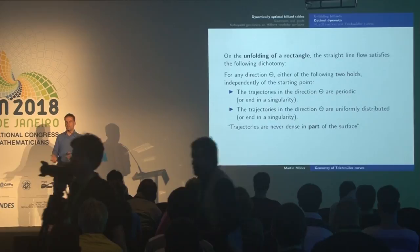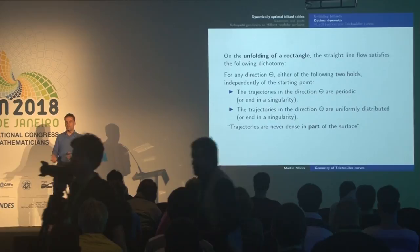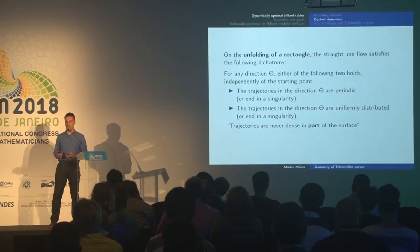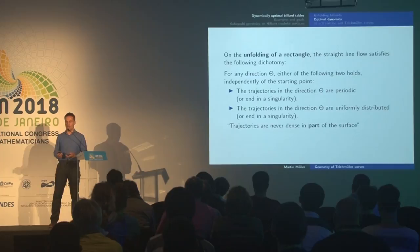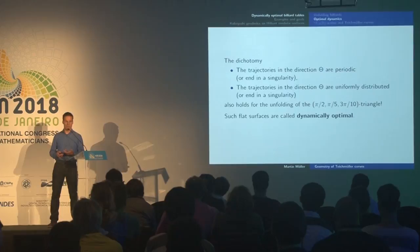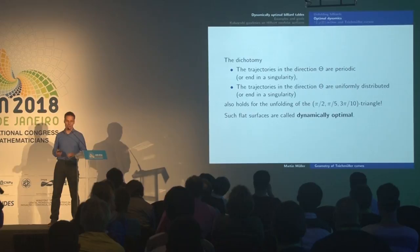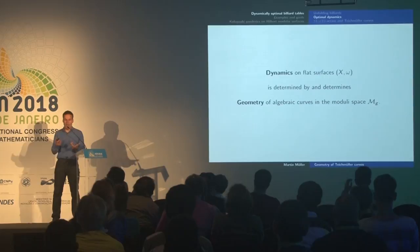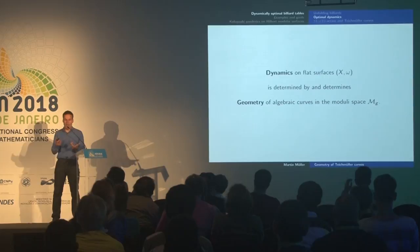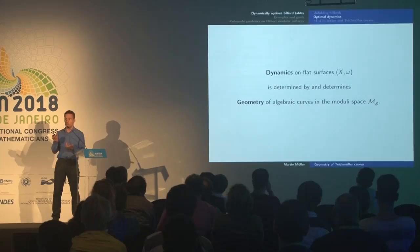For the square, this dichotomy is very easy: it's just rational slope versus irrational slope. The remarkable fact is that this property, which I want to coin dynamically optimal, also holds for other surfaces — in particular, for the unfolding of the triangle I was just showing you. The dichotomy — periodic on the one hand, or uniformly distributed on the other — holds there as well. The moral of this talk will be that in order to find surfaces with this dynamically optimal property, we need to look at complex geometry of curves in the moduli space of curves.